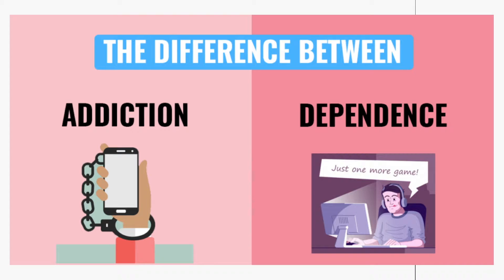I'd like to clarify the difference between addiction and dependence. Addiction is pleasurable to the person, and the person who is addicted cannot stop using it or doing it. Whereas dependence is conditioned so that the drug and/or object are associated with the high and produce that same high that the object gives off.